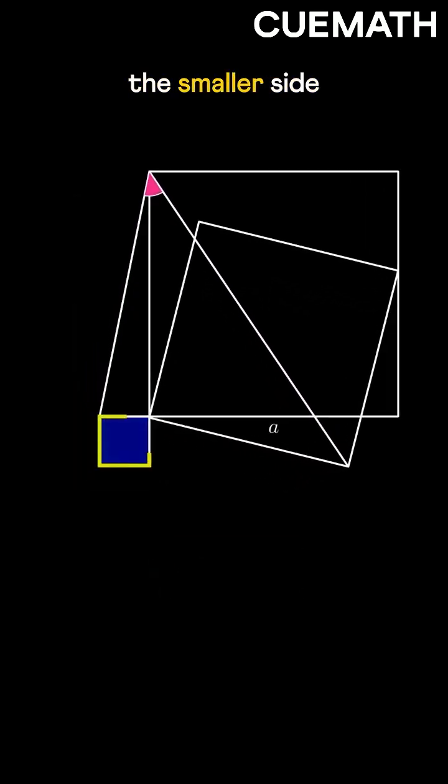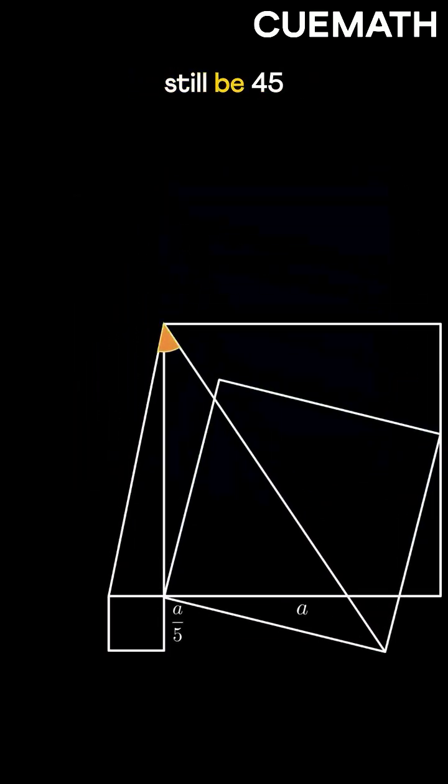If we rearrange the squares so the smaller side is one-fifth of the larger, will the angle still be 45 degrees?